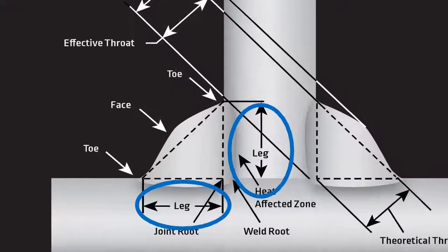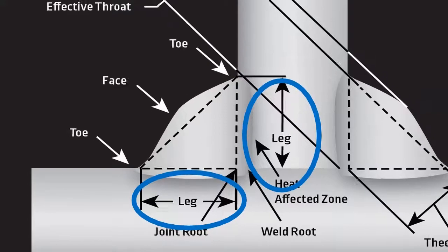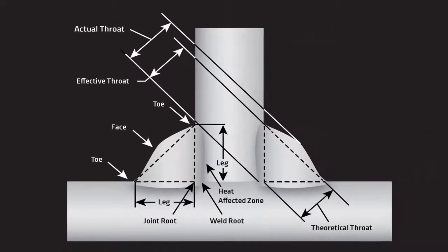The next part of a fillet weld, as you should know, is the leg. The leg is the dimension that we use in the United States to represent the size, and it is the dimension from the joint root to the toe. Typically, most fillet welds are going to have the same size leg on both legs. Sometimes they're going to have to be different, and that'll typically be specified on drawings.